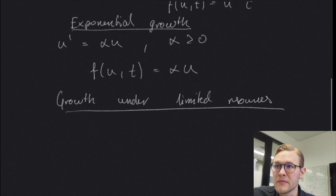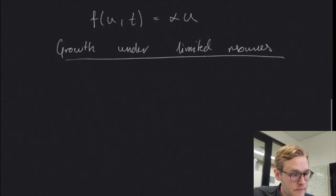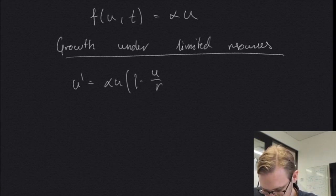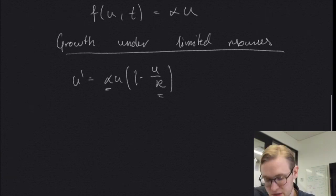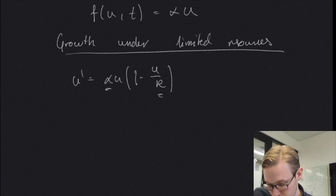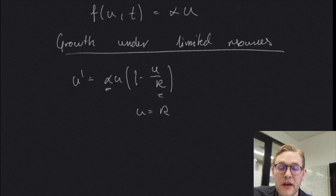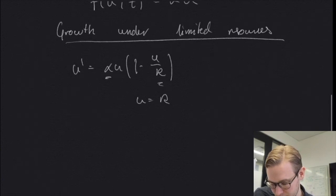Growth under limited resources is the following equation. Again, we have some growth factor alpha, and we also have r which will be the maximum possible value of u. Because we see when u equals r, this expression inside the parenthesis will become zero, and we won't have any growth at that time.